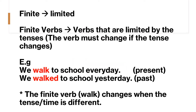Finite means limited. Finite verbs are the verbs that are limited by the tenses, or the verb must change if the tense changes. For example, 'we walk to school every day.' Here, we use walk (verb 1) because it happens in the present form. We must change the verb walk into walked (verb 2) in 'we walked to school yesterday' because it happened in the past. Therefore, the finite verb 'walk' changes when the tense or time is different.